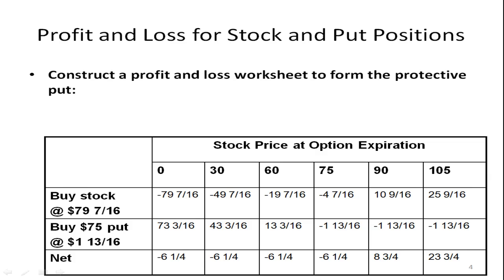Let's look at a payoff matrix for the two positions. If you buy the stock at 79 and 7/16ths: if the price falls to zero, you lose 79 and 7/16ths; if it goes to 30, you lose 49 and 7/16ths; if it goes to 60, you lose 19 and 7/16ths. Just take the price and subtract what you paid for it — that's why you get the negative number. If the price goes up to 90, you make 10 and 9/16ths; if it goes to 105, you make 25 and 9/16ths.